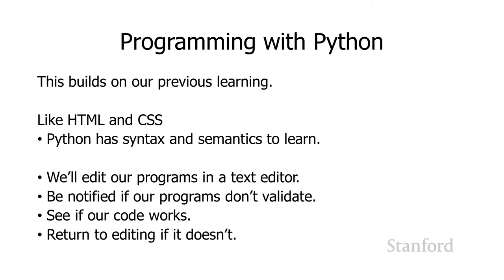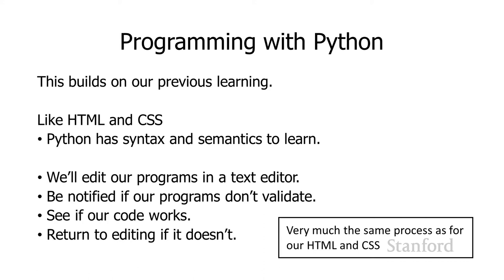This is going to build on what you've learned previously. As with HTML and CSS, Python has its own syntax and semantics rules that we need to learn. We'll edit our Python programs in a text editor. We'll be notified if our programs don't validate correctly because they have syntax errors. We'll need to edit them if they do. We'll see if our code actually does what we think it should, and if it doesn't, we'll return to editing and fix it as needed. This is pretty much the exact same process we've been using for HTML and CSS.